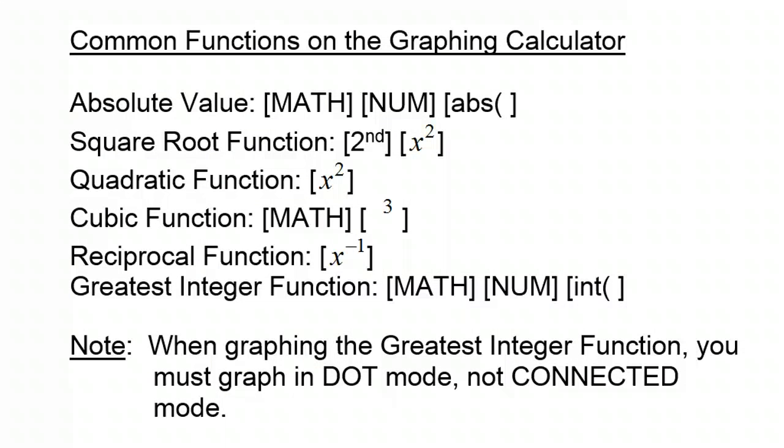And finally, the common functions that we've just talked about can be graphed on your graphing calculator if you know where to find them. The absolute value is in the math menu and it's actually in the number menu of the math menu. So you push your math button and then hit the right arrow to highlight number and then you'll see ABS. That stands for absolute value. If you look down to the cubic function, it's also in the math menu as is the greatest integer function. The greatest integer function is in the same menu that absolute value is in, the number menu, and it's INT. The other ones I think are pretty self-explanatory, but you have them in your notes, in the overhead notes, if you need to refer to them.